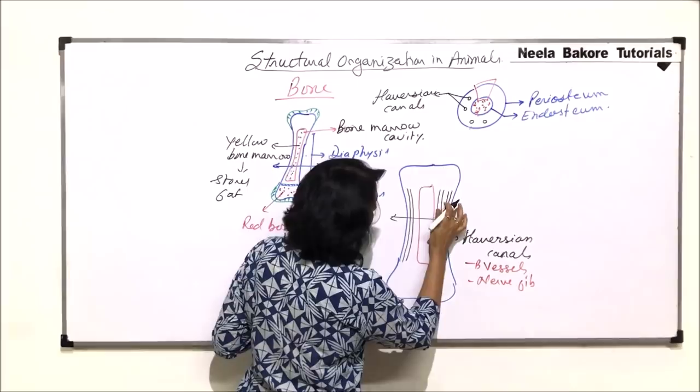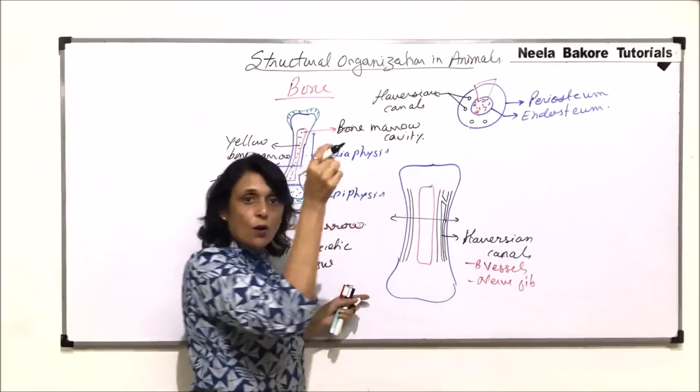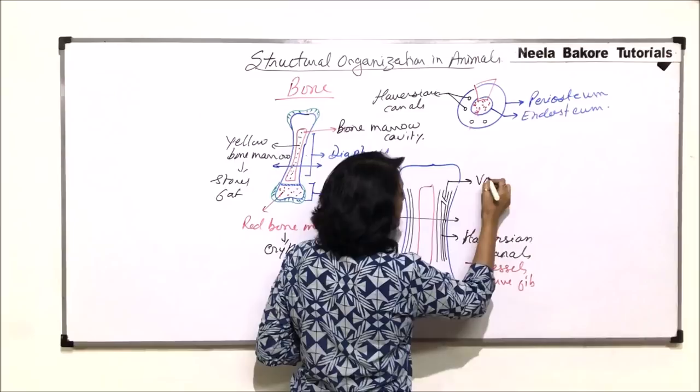If we connect these two Haversian canals, the connection is not straight. The connection is in the form of an obliquely placed canal. This canal is known as Volkmann's canal.